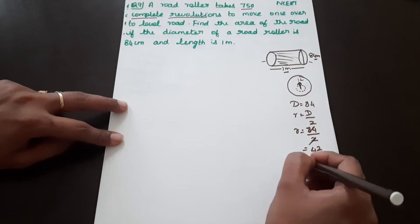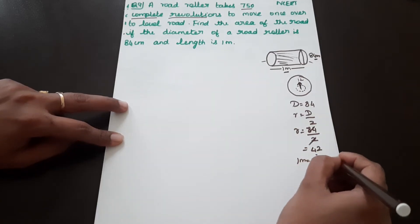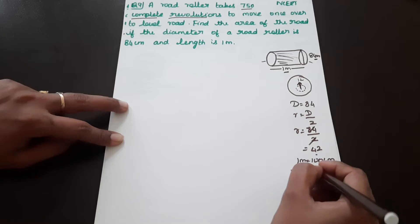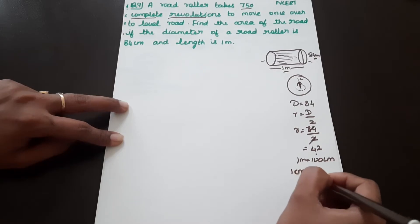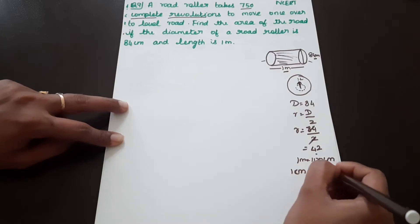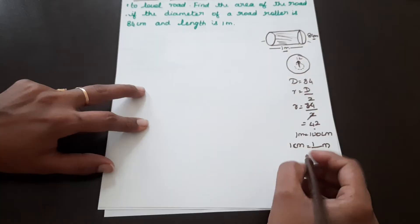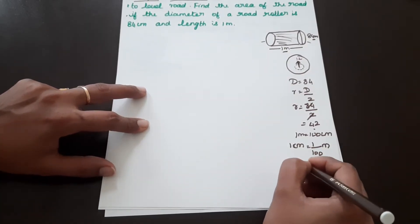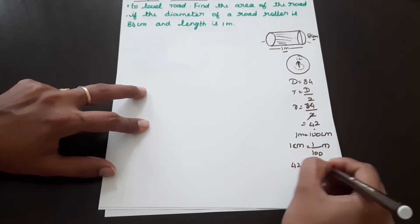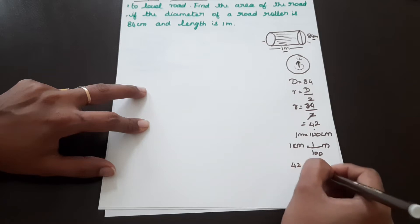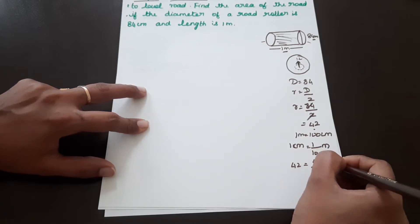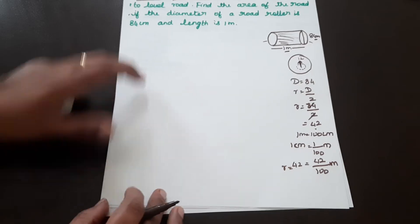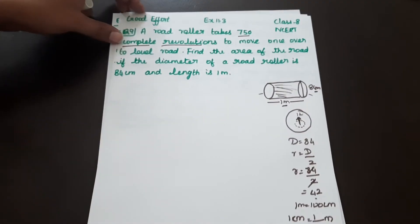Since 1 meter is equal to 100 centimeters, 1 centimeter is equal to 1/100 meter. So 42 centimeters is equal to 42/100 meters. Therefore R is equal to 42/100 meters.